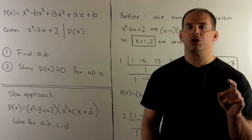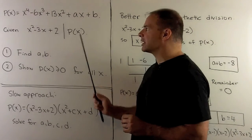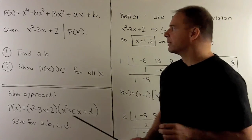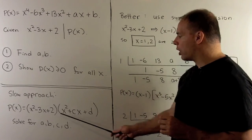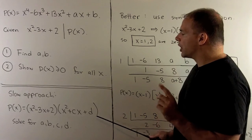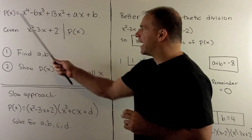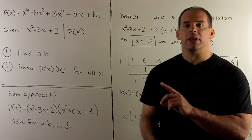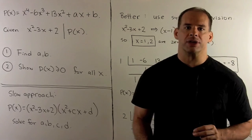For our first approach, since X squared minus 3X plus 2 divides P of X, that just means I can write P of X as our polynomial here times another quadratic with unknown coefficients. We'll just multiply these two quadratics together, set it equal to P of X, and then solve away. Now, since this method doesn't use any technique, we're not going to show the work for this.